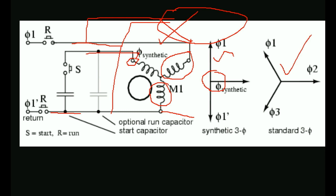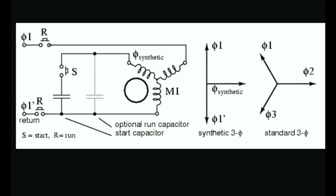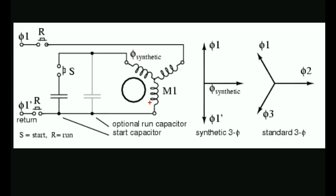We can run two phases and work with a third phase. If we work with a second phase, we can work with a motor but we can lose strength and reduce motor life. For example, this is a 5 or 4 HP motor.